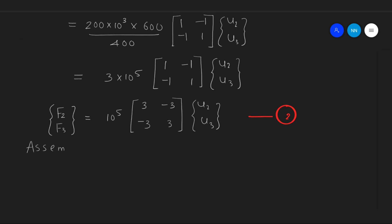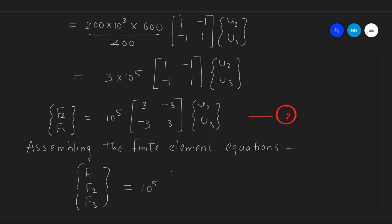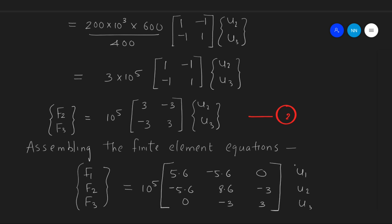Let's assemble the finite element equations of element 1 and element 2. Starting with the force matrix, the assembled matrix [F1, F2, F3] equals the assembled stiffness matrix with 10⁵ as common. Element 1 contributes [5.6, -5.6; -5.6, 5.6] and element 2 contributes [3, -3; -3, 3]. Filling remaining portions with zero, the assembled middle value becomes 5.6 + 3 = 8.6, multiplied by displacement matrix [U1, U2, U3]. Let this be equation number 3.